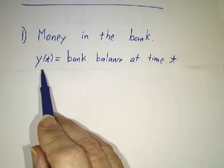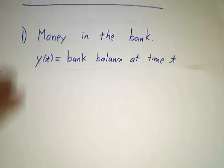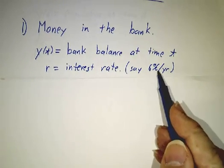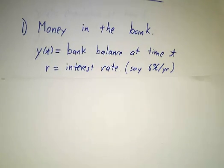So let's suppose that you have a bank balance of y(t). It's how much money you have at time t. And the bank is paying a certain interest rate. Let's say it's 6% per year. That used to be low, these days it's very high. Maybe it'll change in the future.